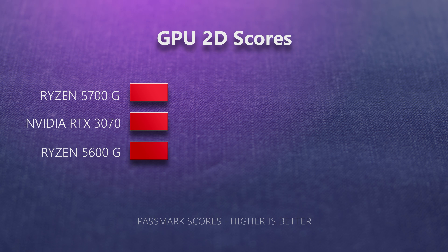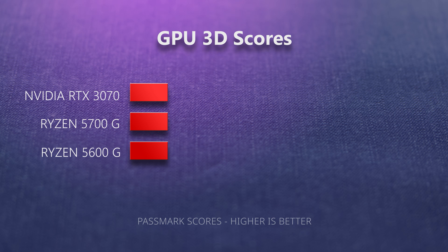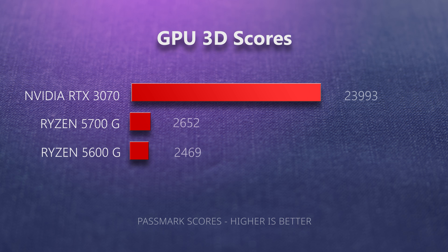Moving on to the GPUs: comparing 2D graphics performance for both APUs, they compare really well with the RTX 3070. However, when it comes to 3D graphics, there is a pretty wide delta between the APUs and the RTX 3070, showing that there is a lot of performance in the 3D arena when it comes to these powerful discrete graphics cards. Let's talk a little bit about the memory requirements.